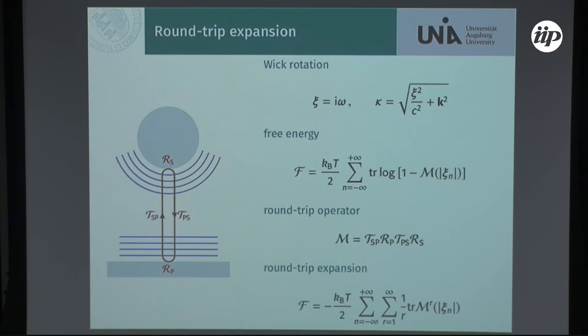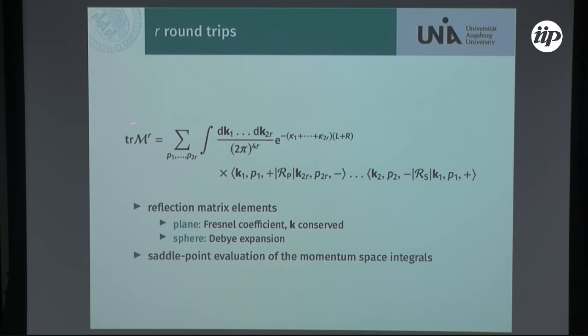It turns out that you need all round trips to get the correct result, so there's no way of cutting off this expansion. For m round trips, the round trip matrix M contains the propagation between sphere and plane — we already have our large parameter R here — and then we have the matrix elements of the reflection operators. The matrix elements for the plane are simple: these are just the Fresnel coefficients. For the sphere these are the coefficients we know from Mie scattering. The idea in the end is to do a saddle-point approximation for this expression.